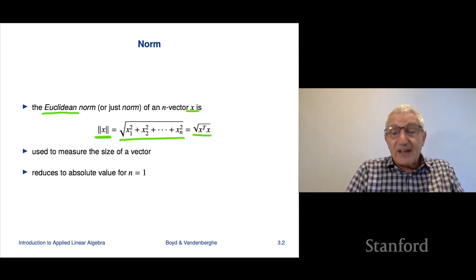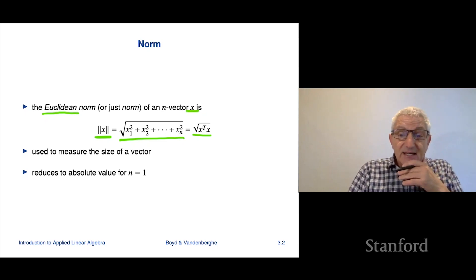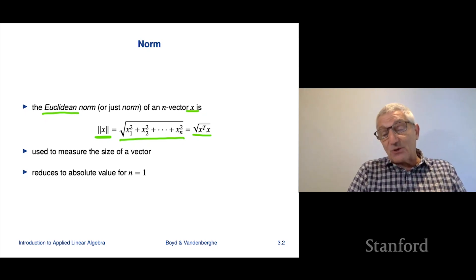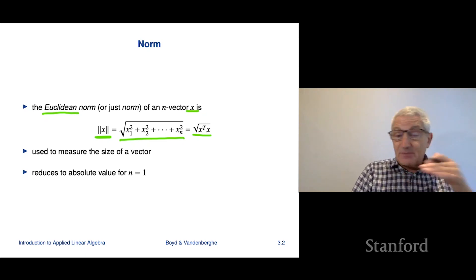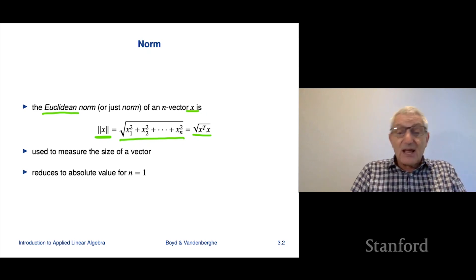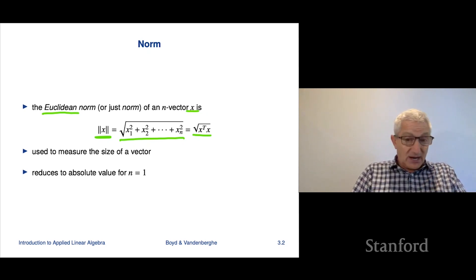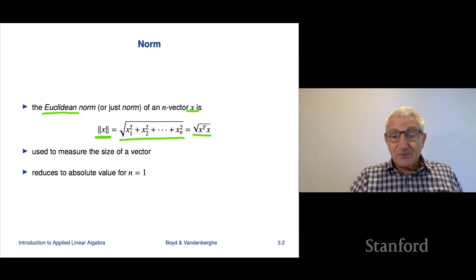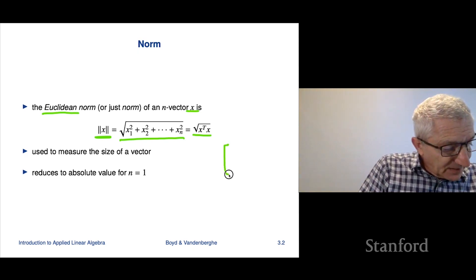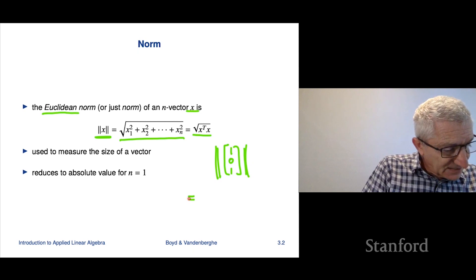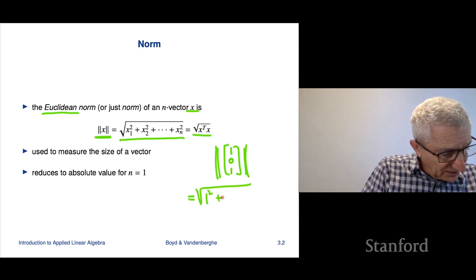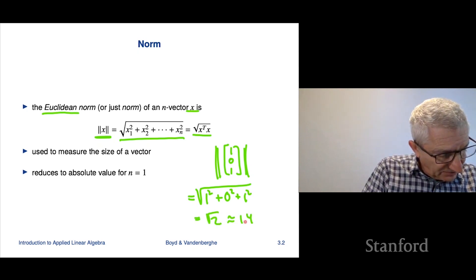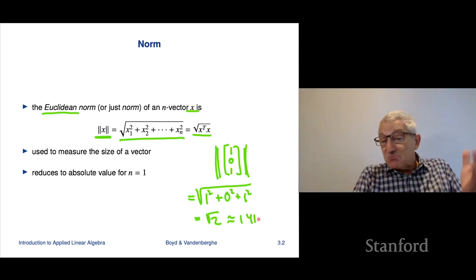Now when n is 1, so it's a 1-vector — which is the same as just a scalar — then the square root of the sum of the squares is nothing but the square root of the square of the entry. And that's the absolute value, because when you square something, whether it's negative or positive, you get the same number, and taking the non-negative square root gives you the absolute value. So the norm is a generalization of absolute value to vectors. For a quick example, the norm of the vector [1, 0, 1] is the square root of 1 squared plus 0 squared plus 1 squared, which is the square root of 2, about 1.41.